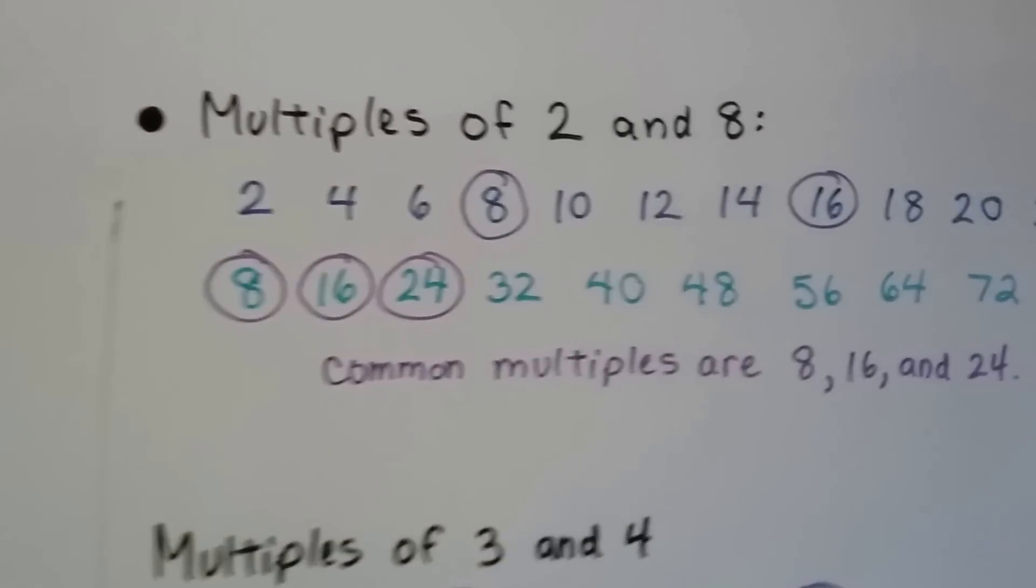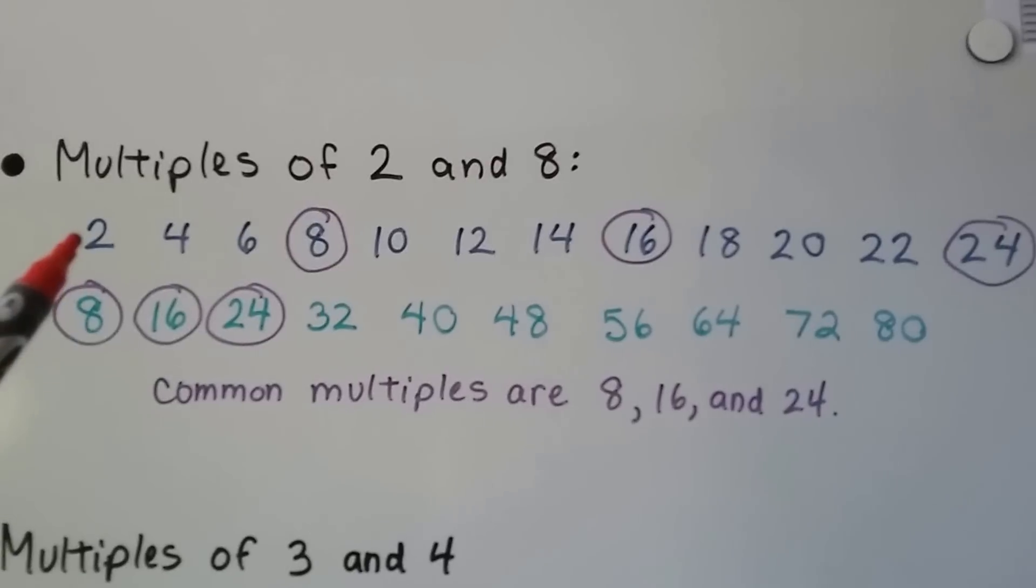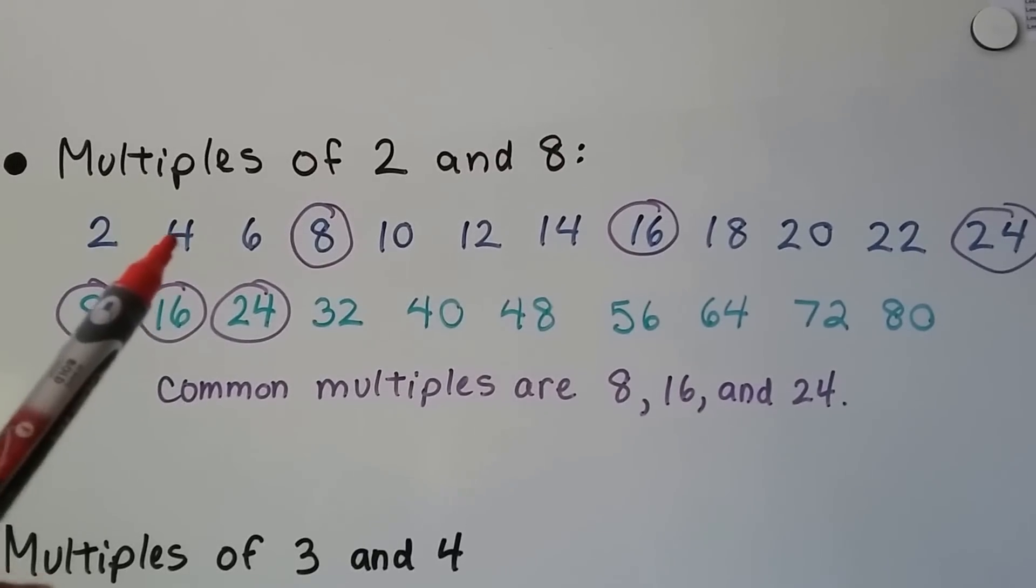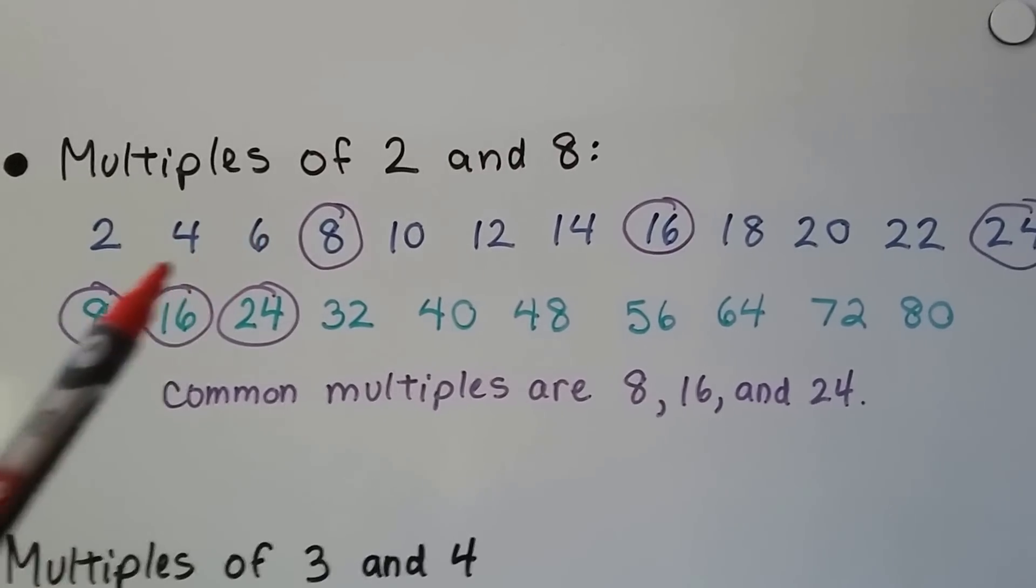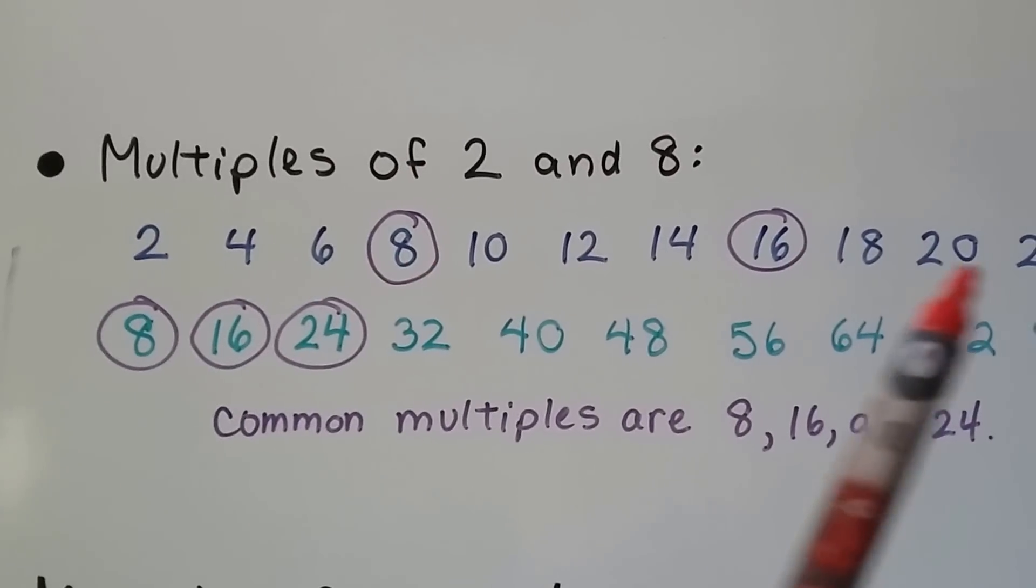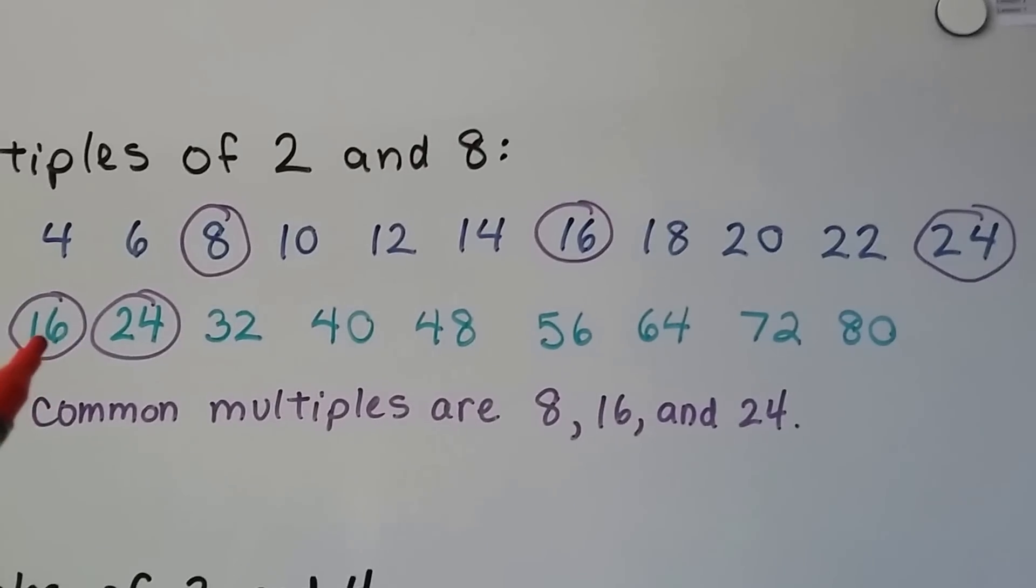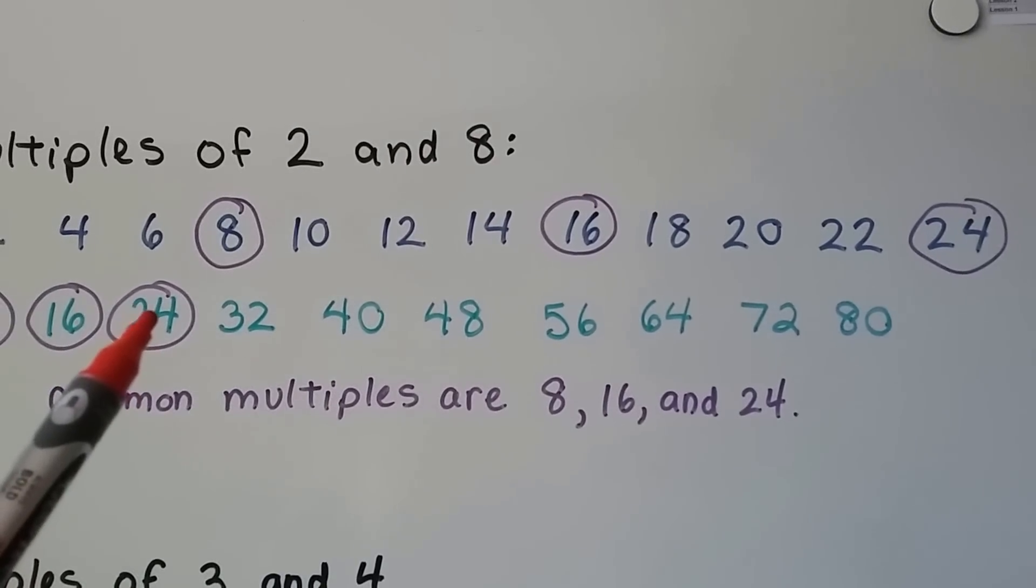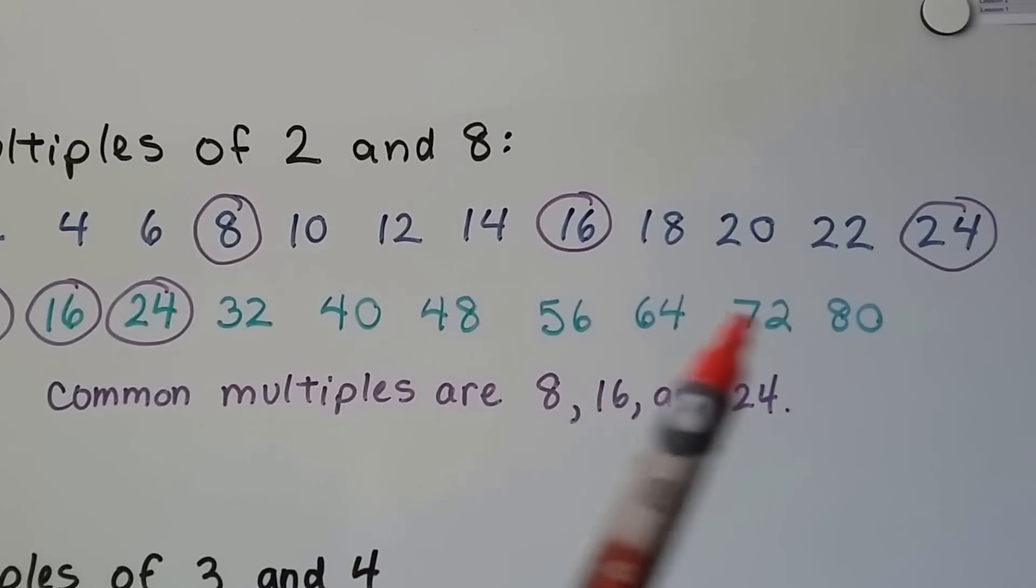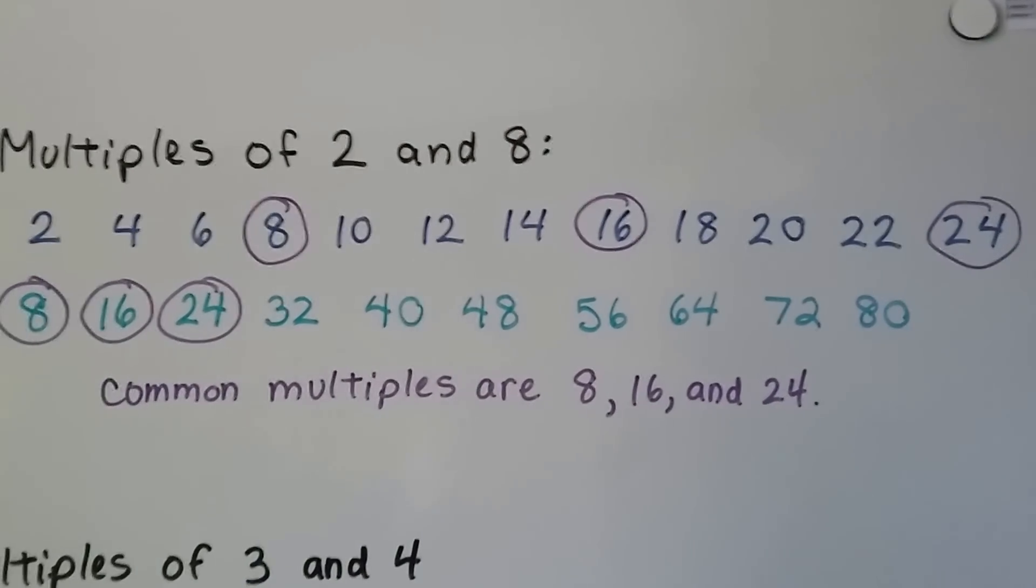The multiples of 2 and 8, we list all the multiples of 2. We start with 2 times 1 is 2, 2 times 2 is 4, 2 times 3 is 6. It's 2 times a counting number. So we list all the multiples of 2. We do the same thing for 8. 8 times 1 is 8, 8 times 2 is 16, 8 times 3 is 24. And we keep going, skip counting by 8.